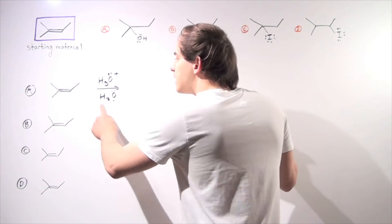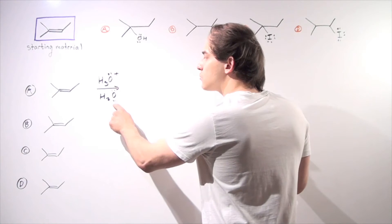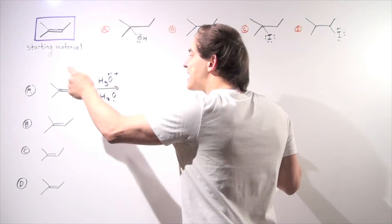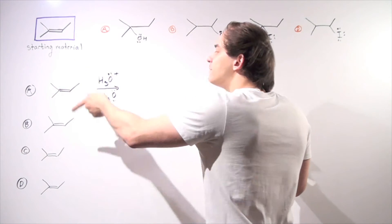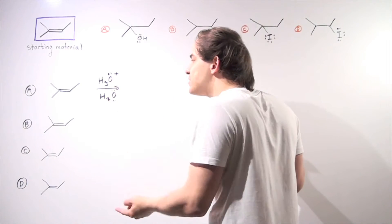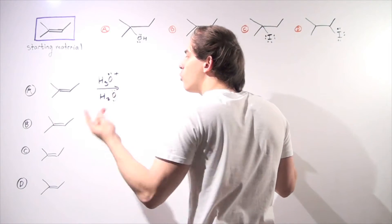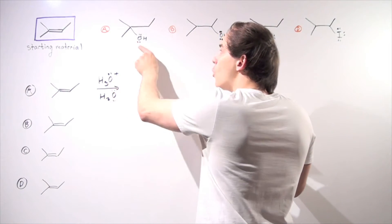The second step is our hydration step. The lone pair of electrons attacks this carbocation. And the final step is deprotonation of the water, forming our hydroxide, our OH group.